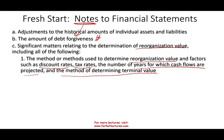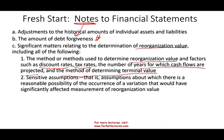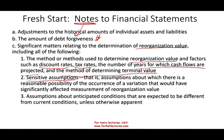We need to explain how we came up with all these numbers, including sensitive assumptions — that is, assumptions about which there is a reasonable possibility of a variation that would significantly affect measurement of the reorganization. What assumptions did we make? We also need to disclose assumptions about anticipated conditions that are expected to be different from current conditions, unless otherwise apparent. Those are the required notes to the financial statements.